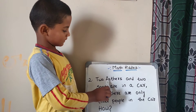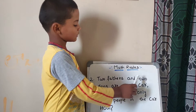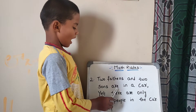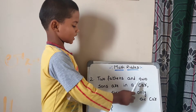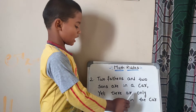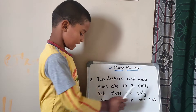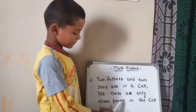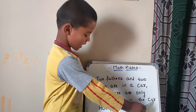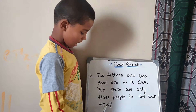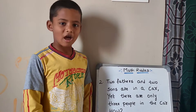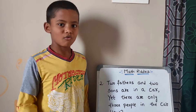Video number 2. Two fathers and two sons are in a car, yet there are only 3 people in the car. How?